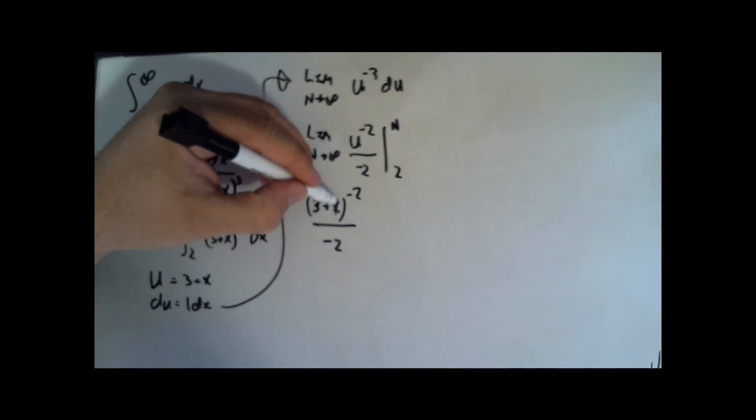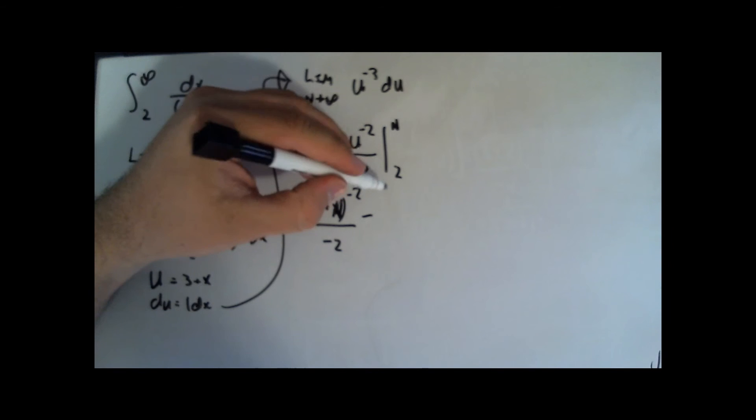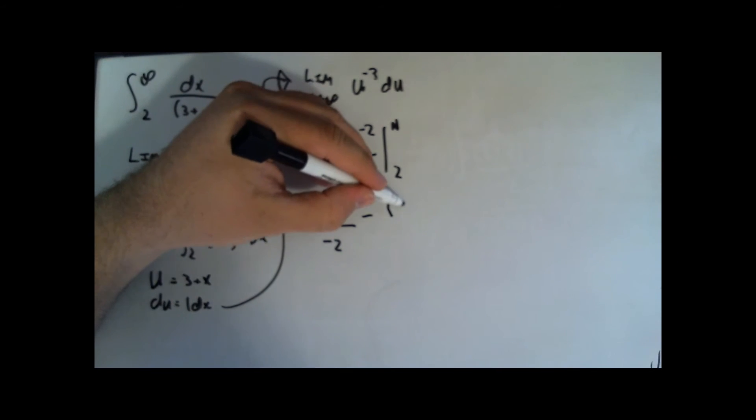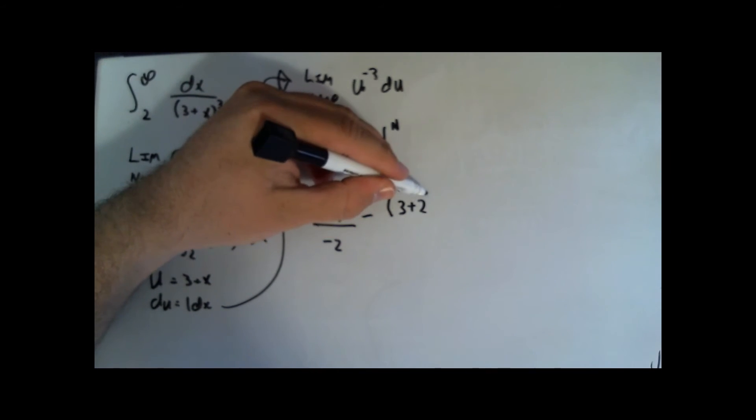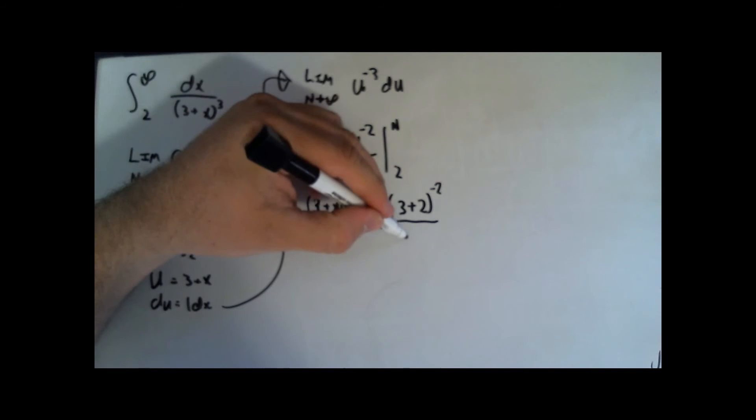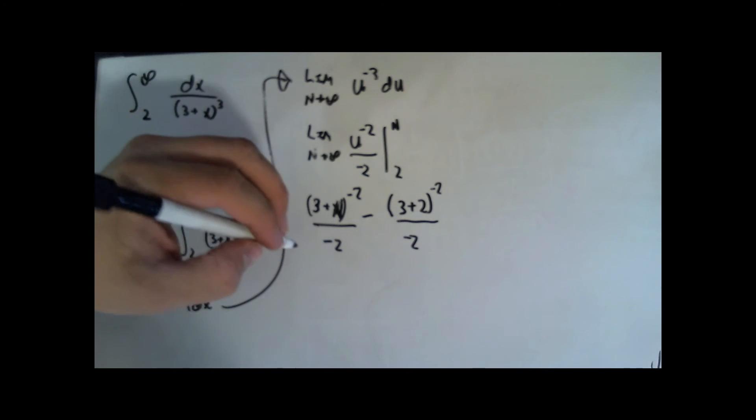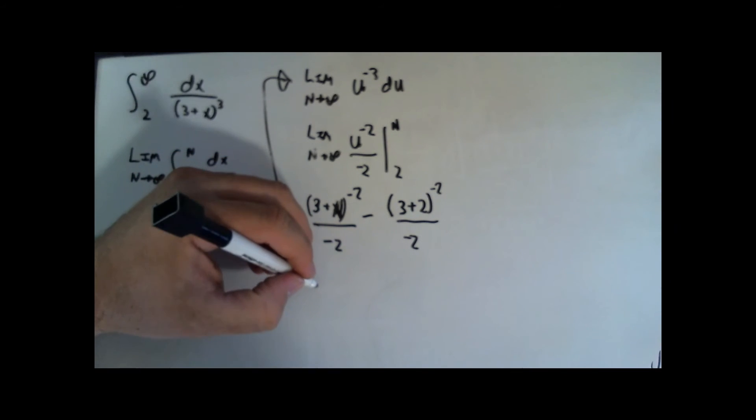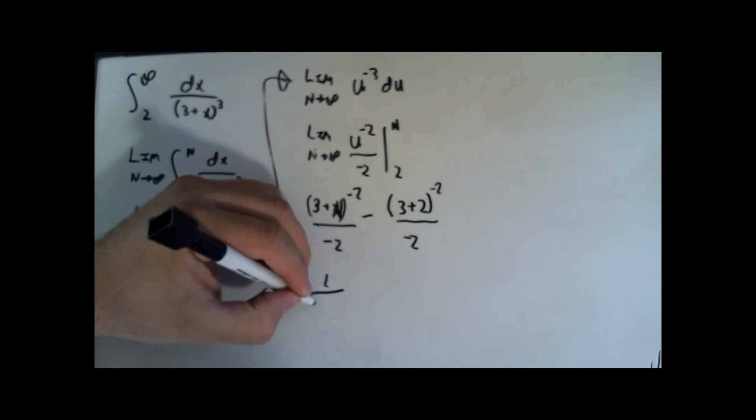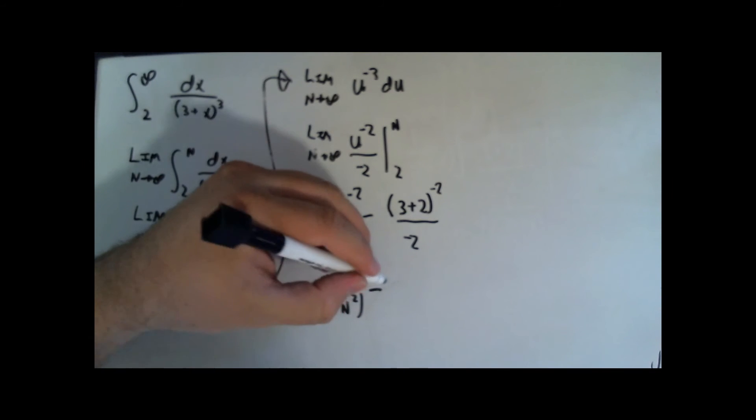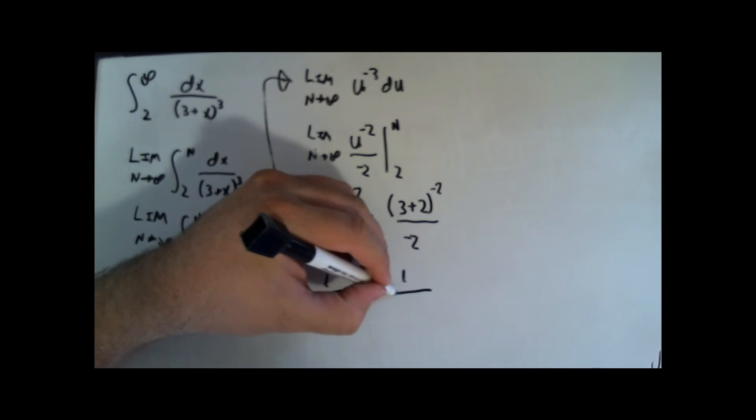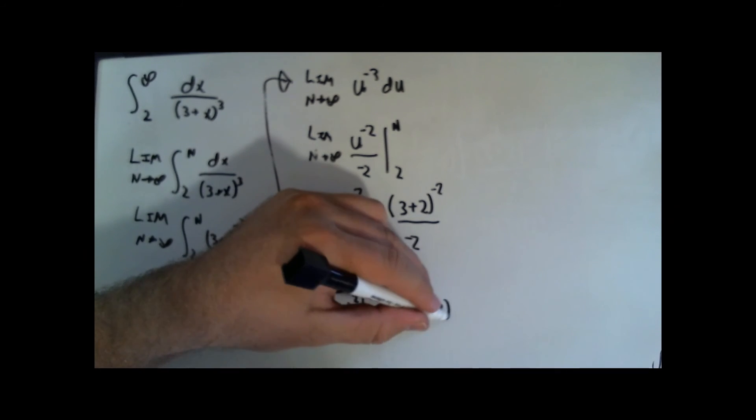I'm going to add in my n value here minus 3 plus 2 to the negative 2 divided by negative 2. I'm going to take our numerator and put it in the denominator to get rid of that negative exponent and say 1 over 3 plus n squared times 2 minus 1 over negative 2 times 3 plus 2 squared.